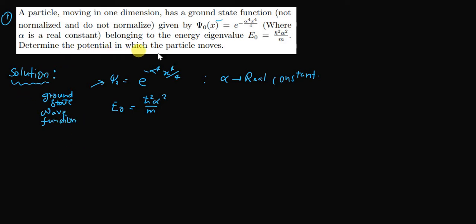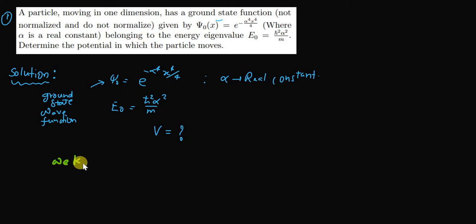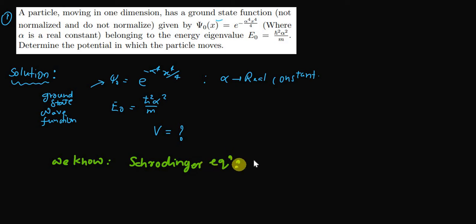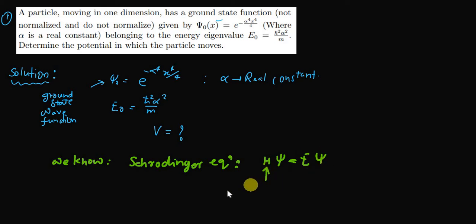So we need to determine the potential in which the particle moves. We know the Schrödinger equation, which is nothing but Hψ = Eψ, where H is the Hamiltonian operator.